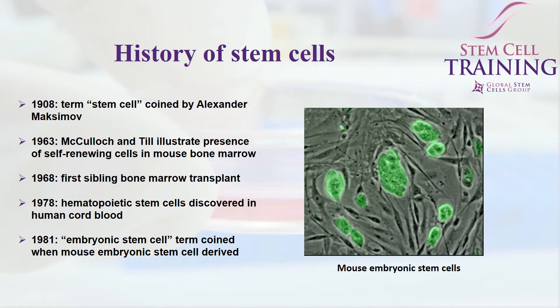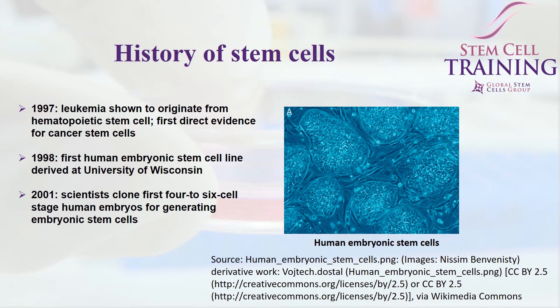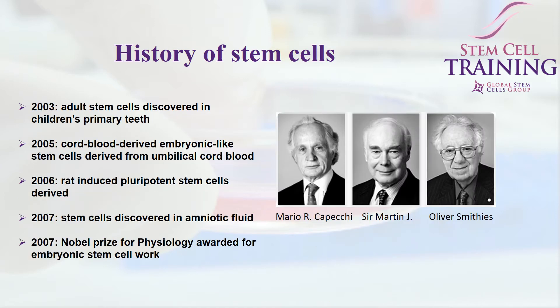The embryonic stem cell term wasn't coined until the 80s, when mouse embryonic stem cells were derived. Then, in the 90s, we began to discover that many cells existed within the body, leading to the discovery of human embryonic stem cells, so that in 2001, we were able to first clone Dolly the sheep. After that, we began to more rapidly develop stem cells from a variety of different sources, and for the first time in 2007, there was a Nobel Prize awarded for the work done in embryonic stem cells.